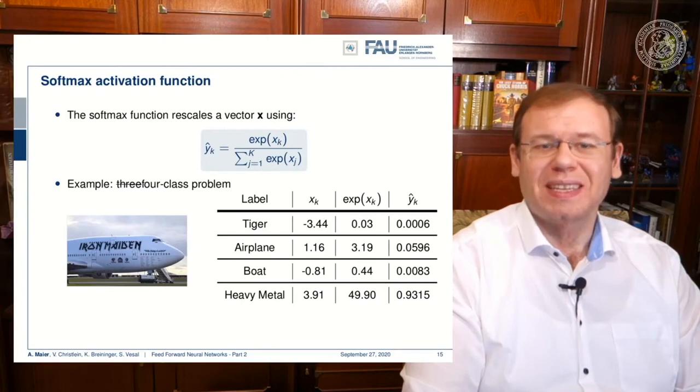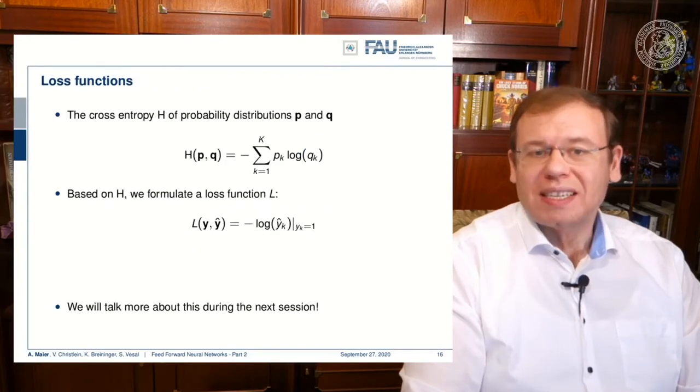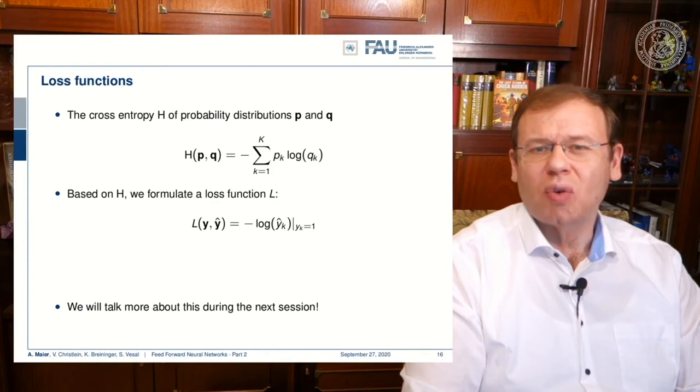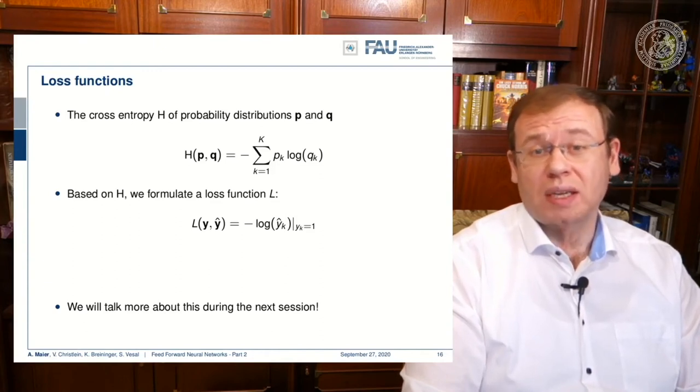So let's go ahead and also talk a bit about loss functions. The loss function is a kind of function that tells us how good the prediction of a network is. A very typical one is the so-called cross entropy loss.